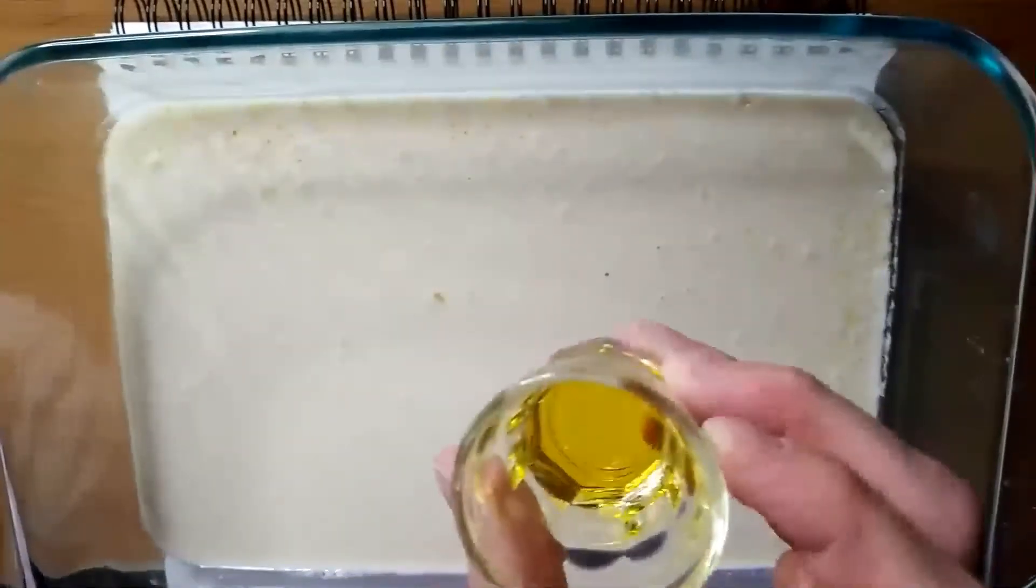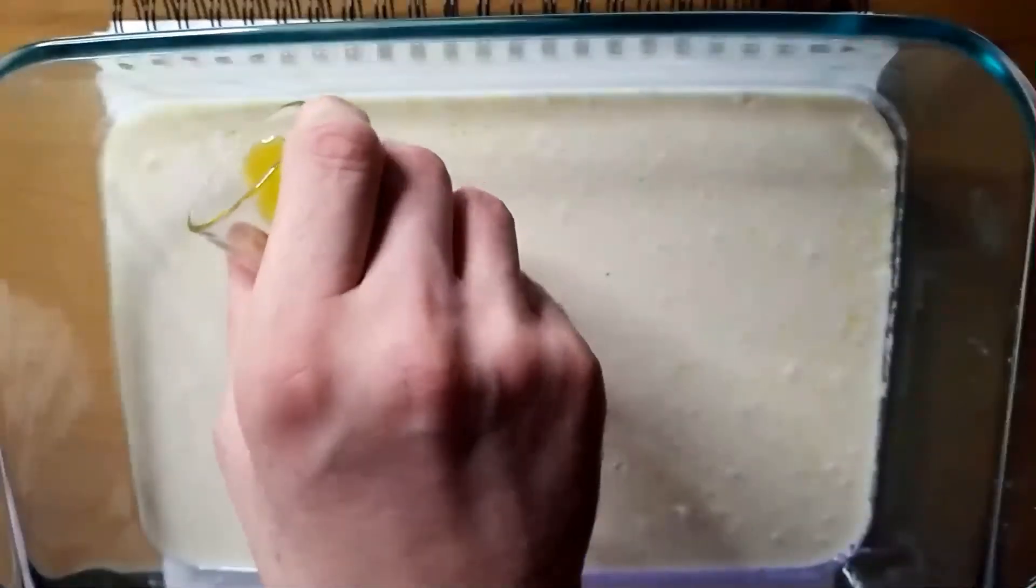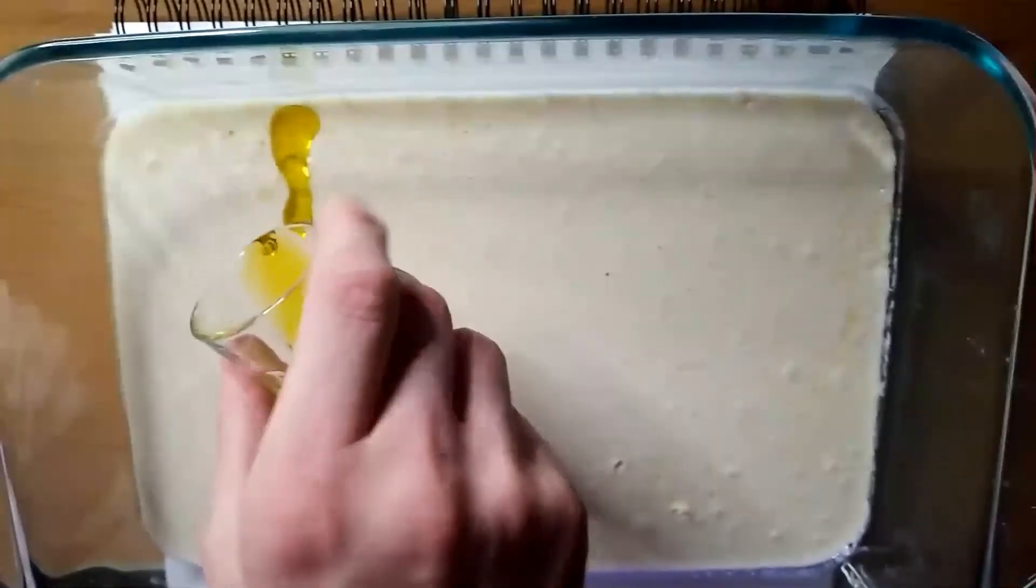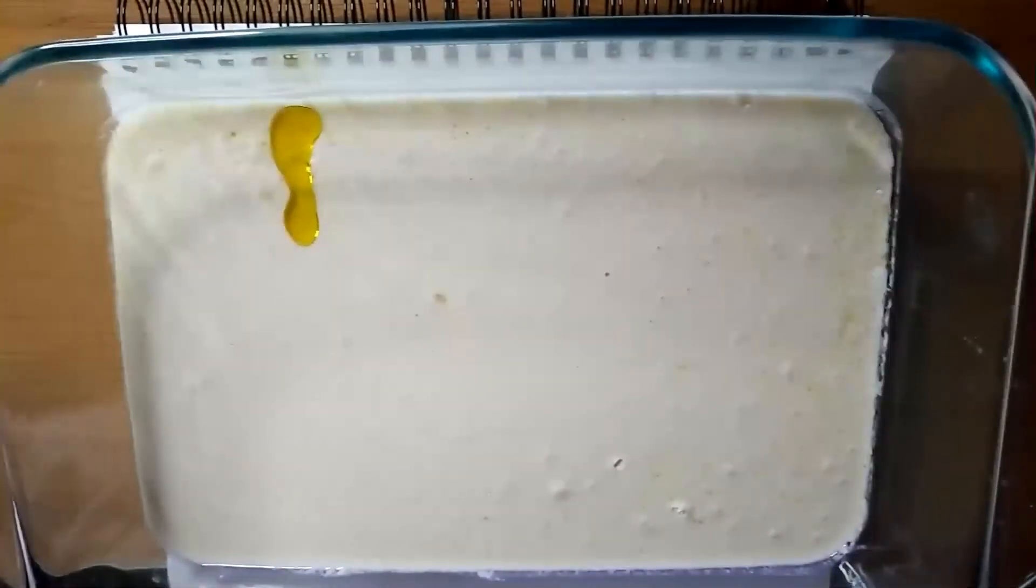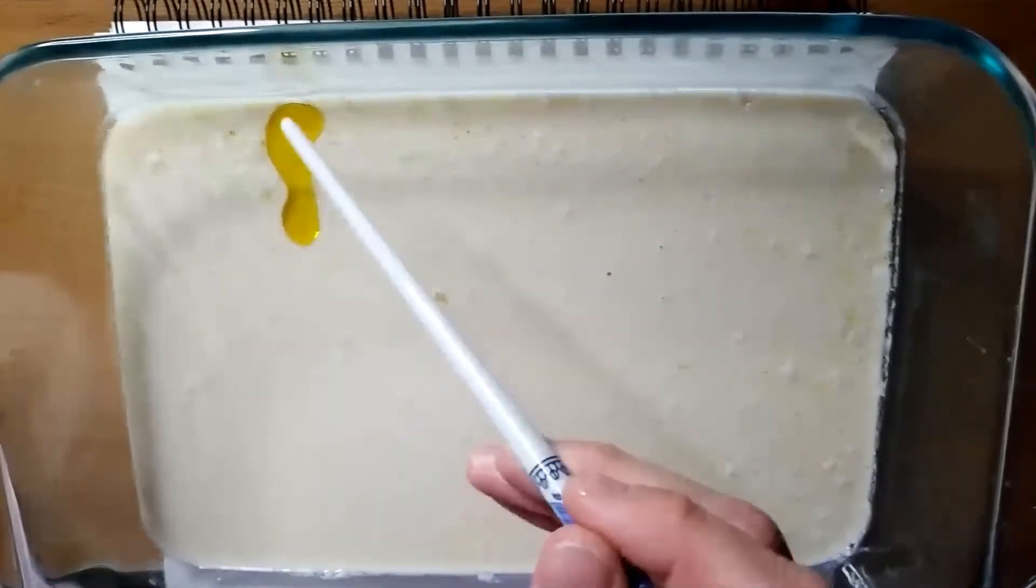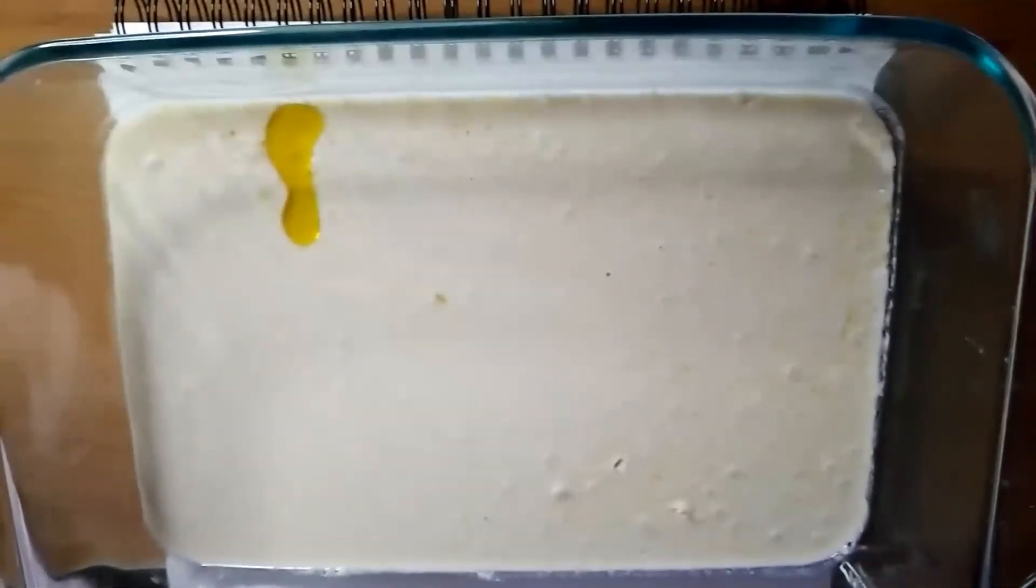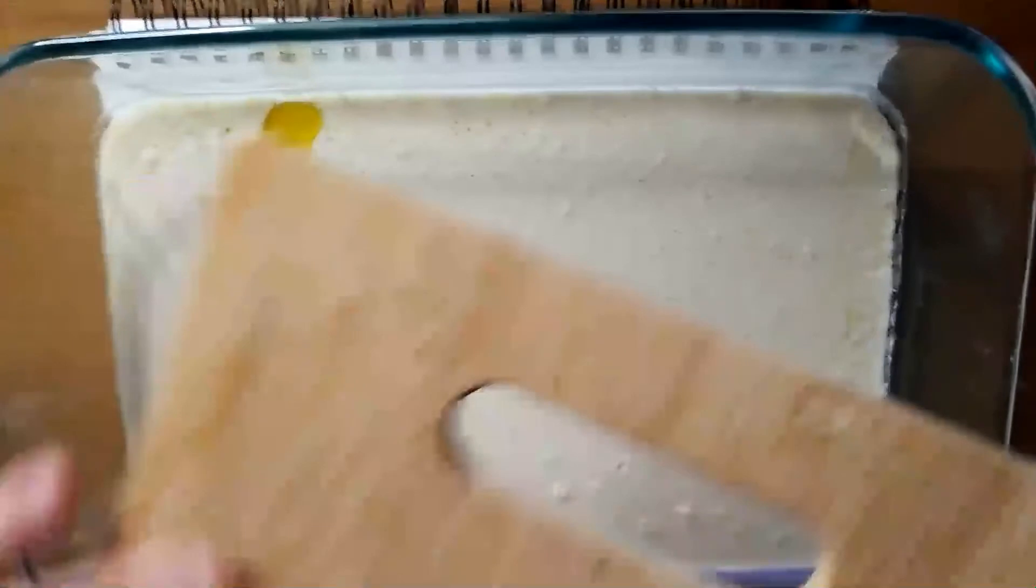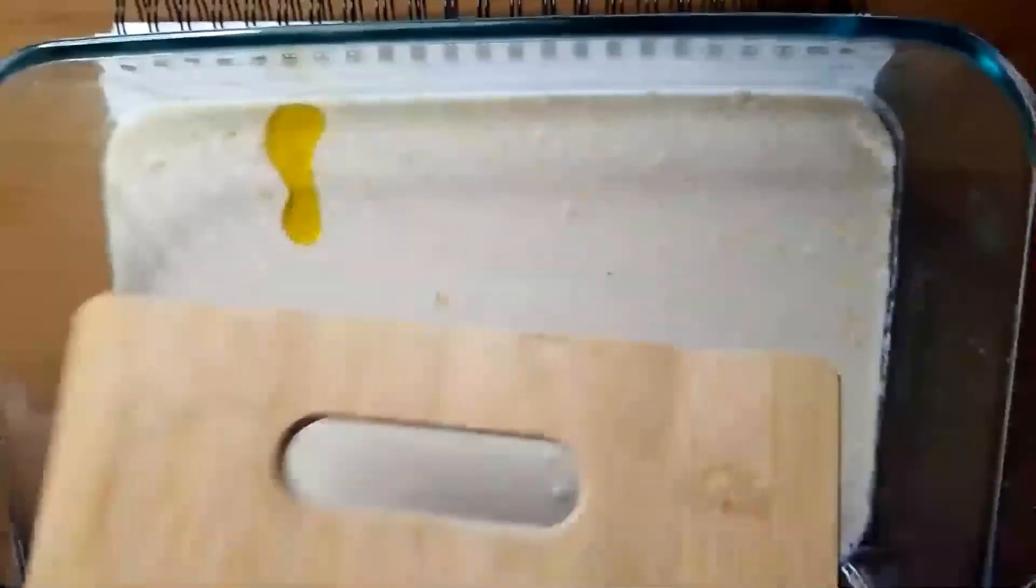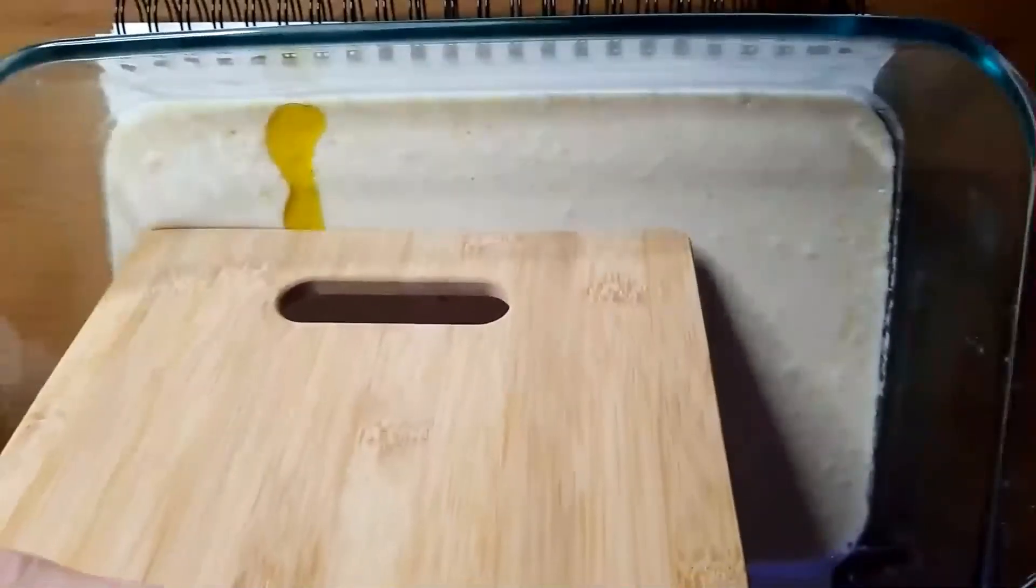To demonstrate the nature of viscosity I'll use a little bit of oil and I'll make a line like this, a little kind of straight line. And the line is running between this glass plate and this point over here. Now I will use a simple wooden cutting board and put it here close to the end of this line.